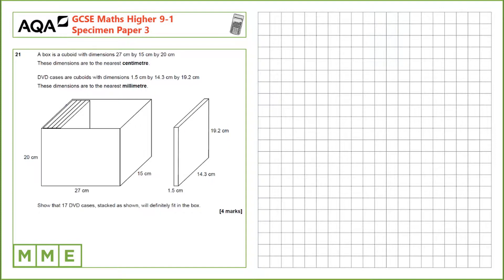Let's consider whether they'll fit depthwise and heightwise, and then we'll think about the length. So the maximum dimensions of the DVD - if we're making sure that they definitely fit, we want the maximum size of the DVD and the minimum size of the box.